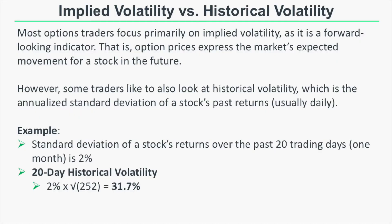Most options traders focus primarily on implied volatility because it is a forward-looking indicator. Option prices express the market's expected movement for a stock in the future. So if option prices are more expensive on a stock, that expresses a larger expected move for that stock in the future relative to a stock with much cheaper option prices.